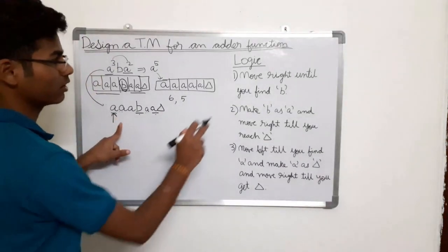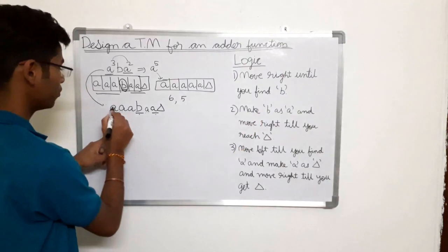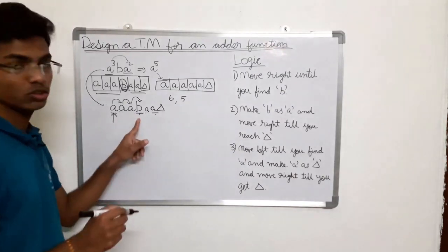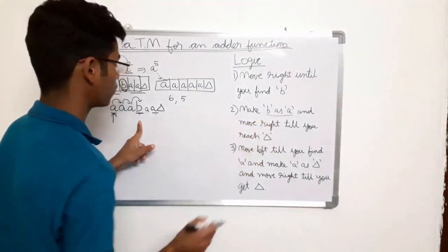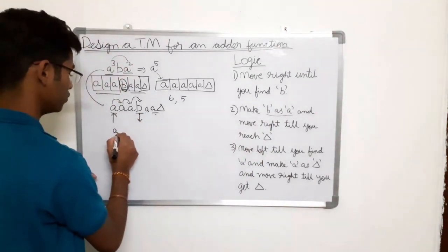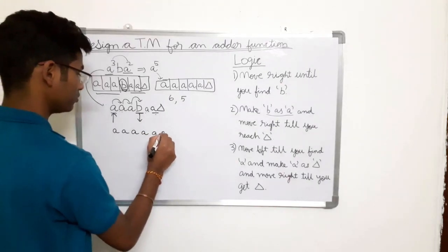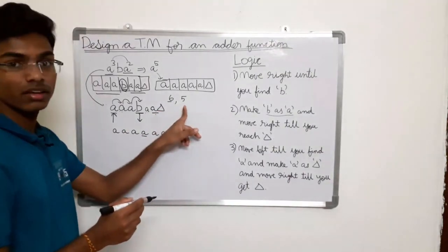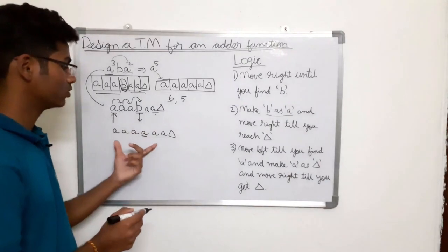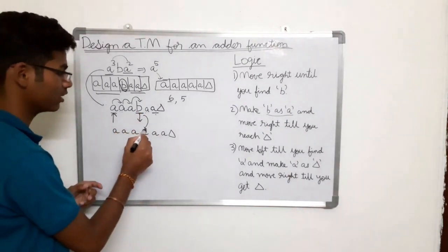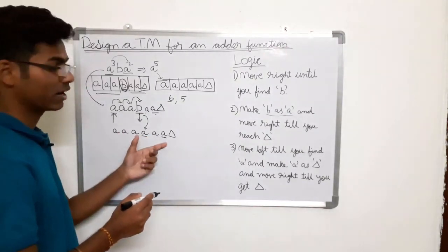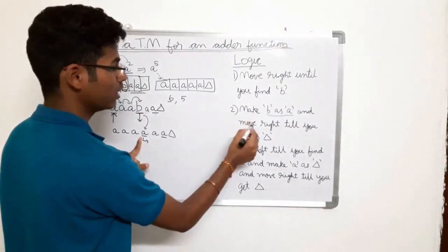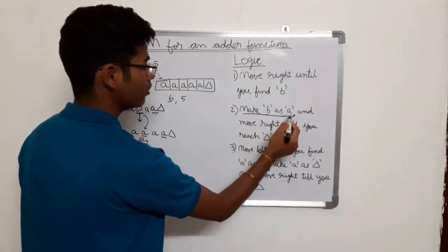Initially we are at the start. Move right till you find small b — move right, move right, move right — until you find small b. Now make small b as small a, converting it into small a. The resulting string now has six a's, which is one too many, so since we added an extra a we should balance it by making one a into delta.